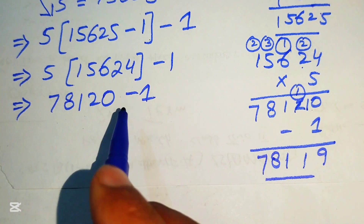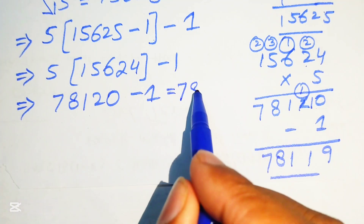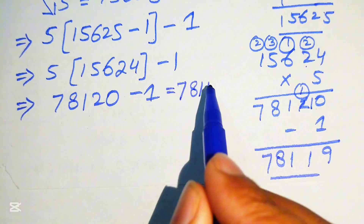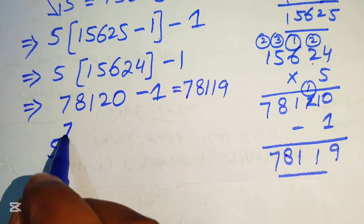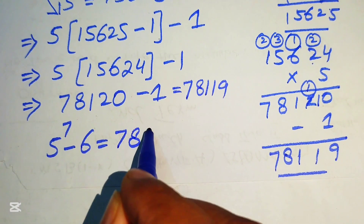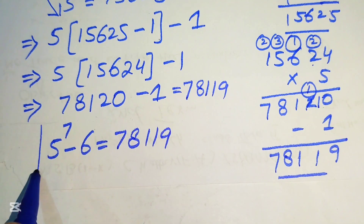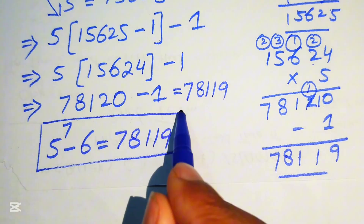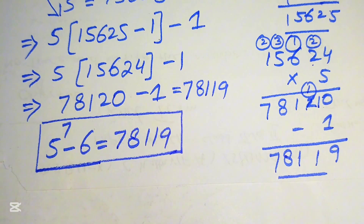Subtracting 1 from 78,120: we take 1 from the units digit to get 10 minus 1 equals 9, with remaining digits 1, 8, 7. So finally, 5 to the power of 7 minus 6 equals 78,119. This is our final answer. Thank you so much for watching this video — please subscribe to my channel for more exciting videos.